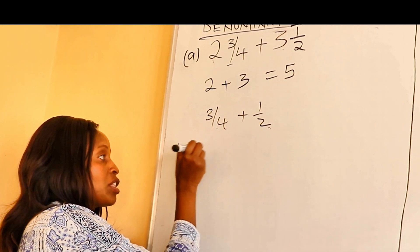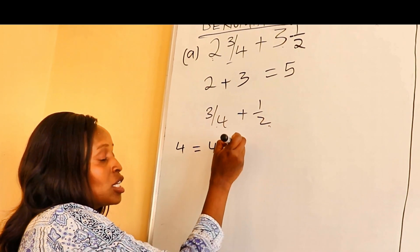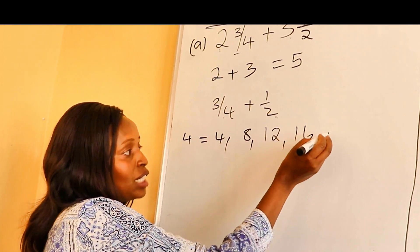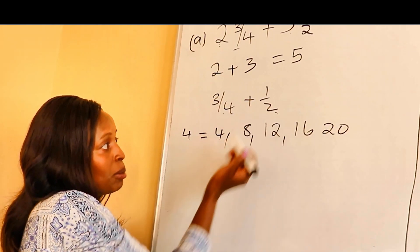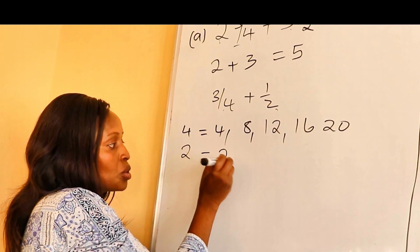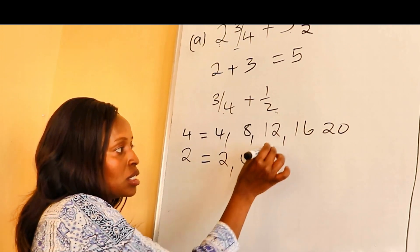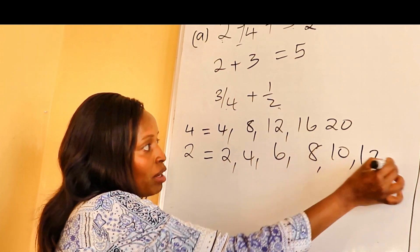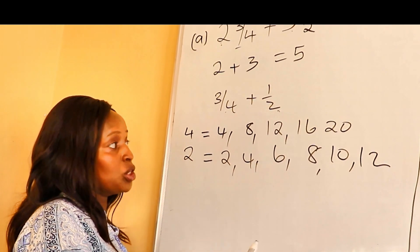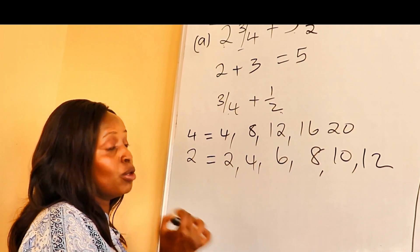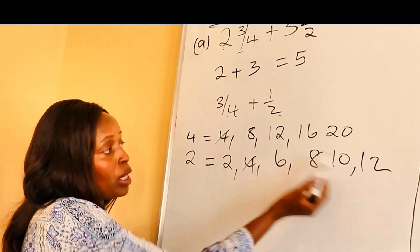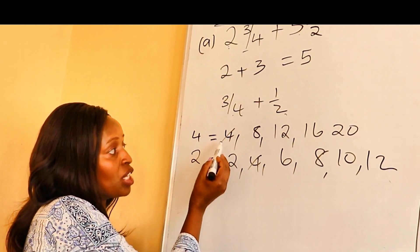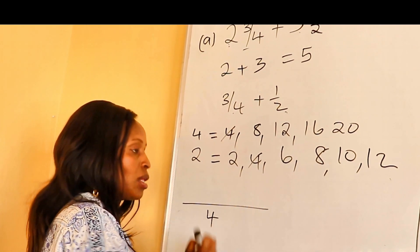The LCM of four and two: we find the multiples of four — four, eight, twelve, sixteen, twenty — and the multiples of two — two, four, six, eight, ten, twelve. Remember, for the LCM we pick the least common multiple. Although twelve is common, four is smaller, so the LCM is four.